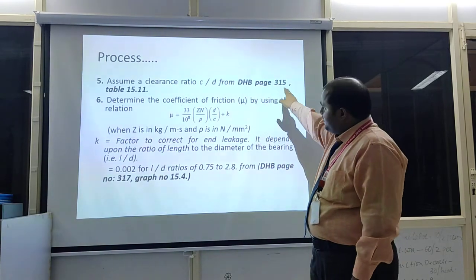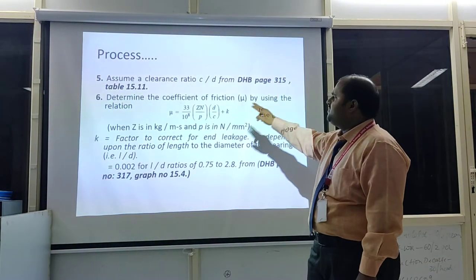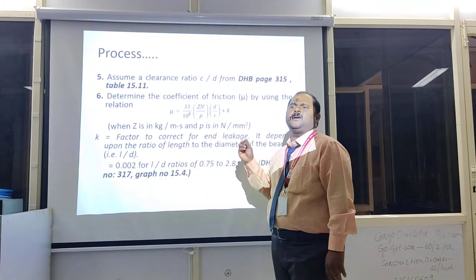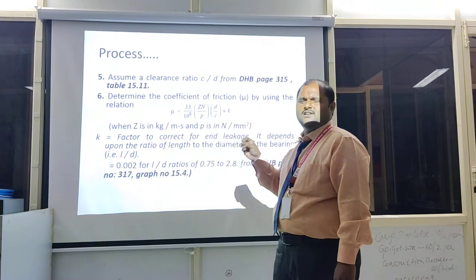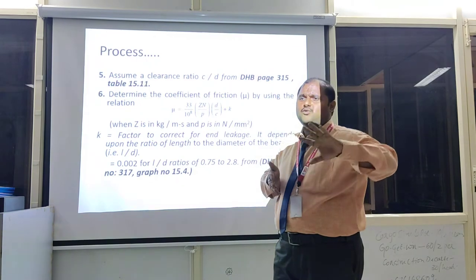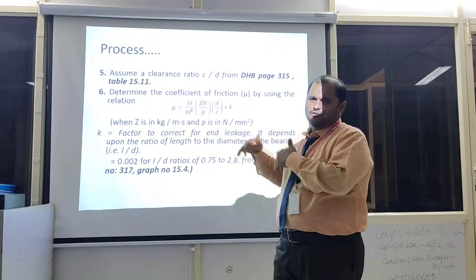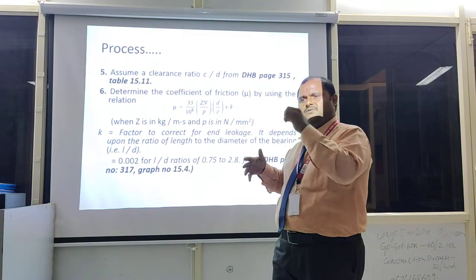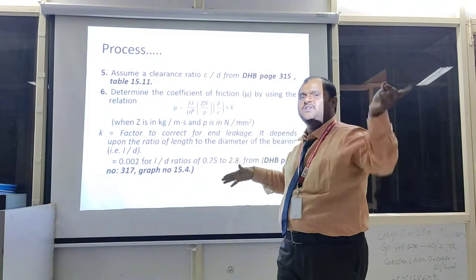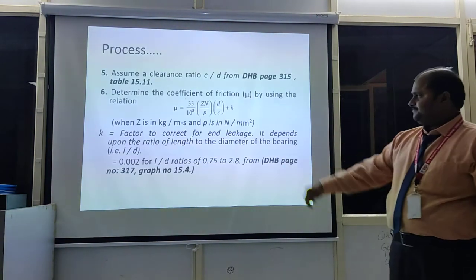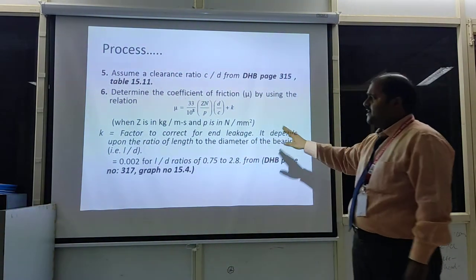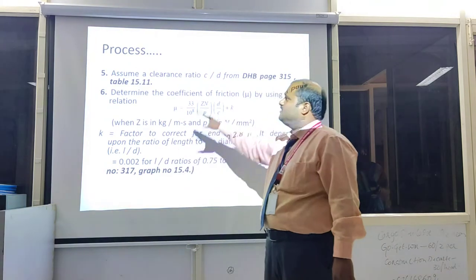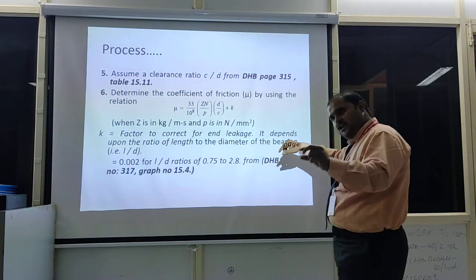Step 5 — assume the clearance ratio C/D from the data book. Step 6 — determine the coefficient of friction μ using the empirical relation from the data book. Note: all formulas shown in this procedure can be obtained from the data book, which is allowed in the DMM2 examination. K is a factor to correct for end leakage, and it depends upon the ratio of length to diameter (L/D); its values are given in the data book.